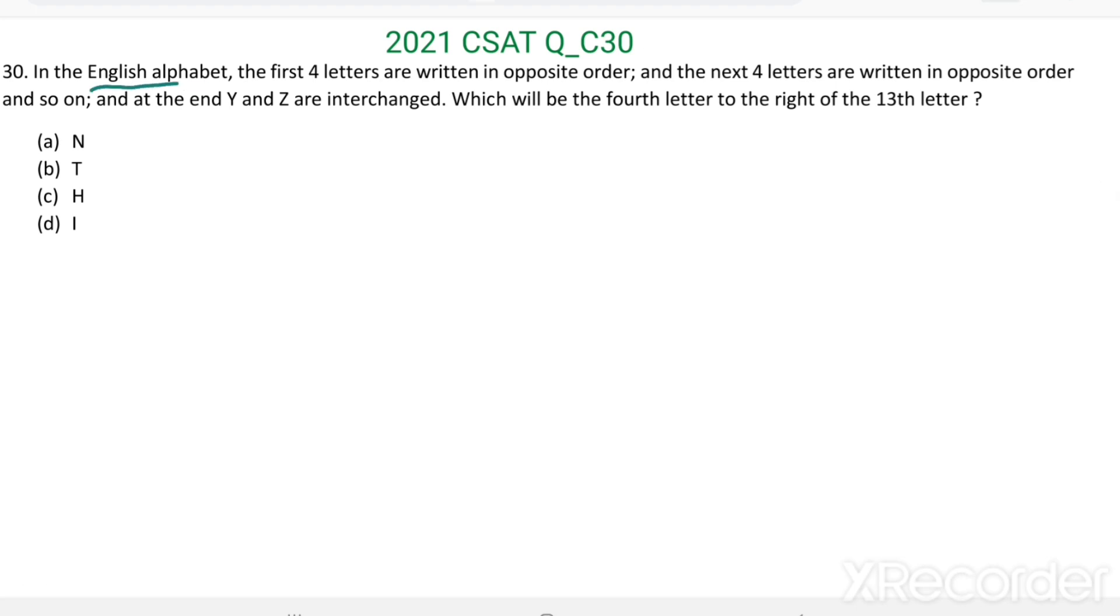We know in English alphabet, there are 26 letters. These 26 letters are grouped into group of four. Then 26 divided by four, there will be six groups and Y and Z.